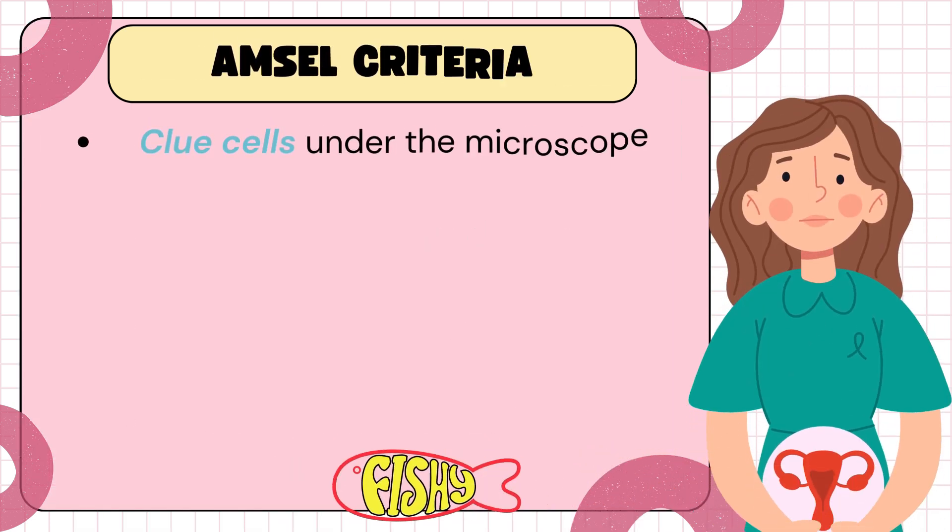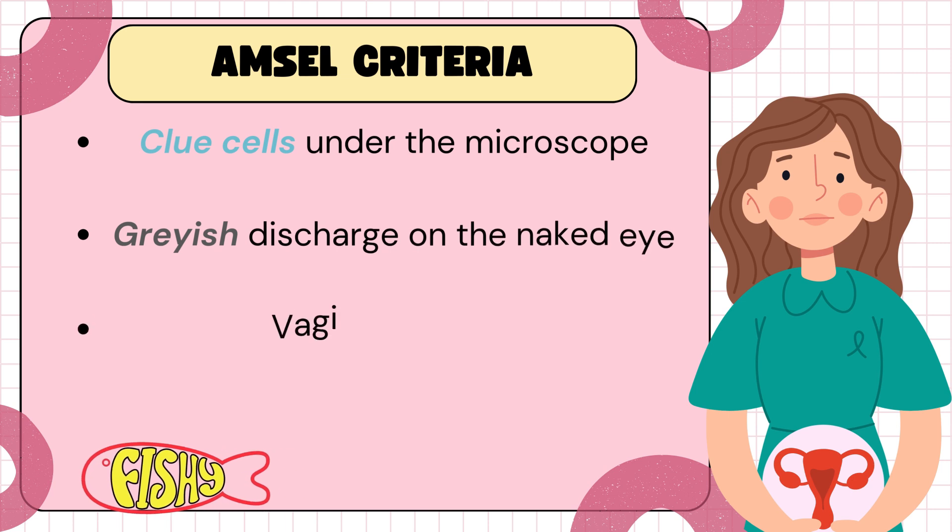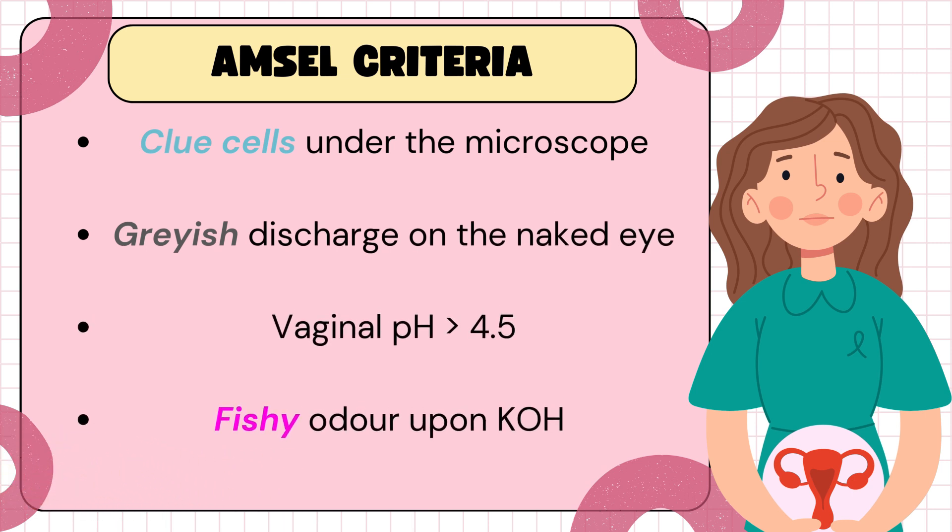To diagnose a patient with bacterial vaginosis, we use the Amsel criteria. There are four components: number one, thin homogeneous discharge; number two, a positive whiff test — when you add potassium hydroxide to the discharge it gives out a fishy odor; number three, clue cells on microscopy; and finally, a vaginal pH more than 4.5. If a patient presents with three out of four of these criteria, we can diagnose bacterial vaginosis.